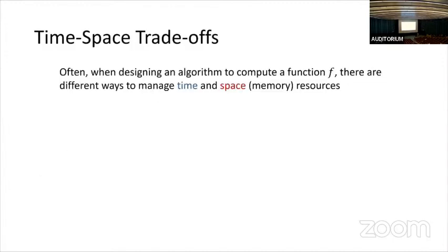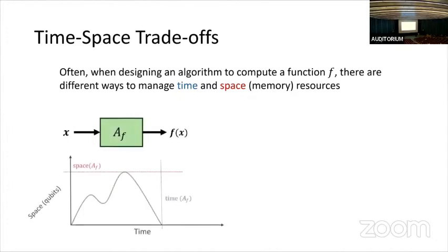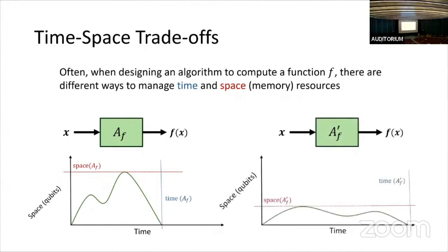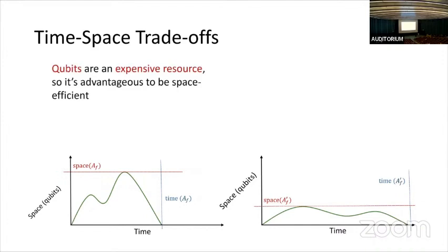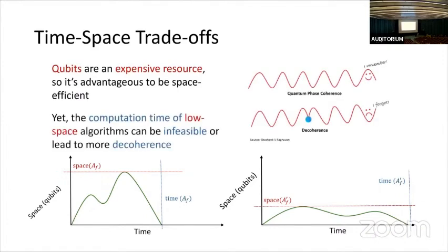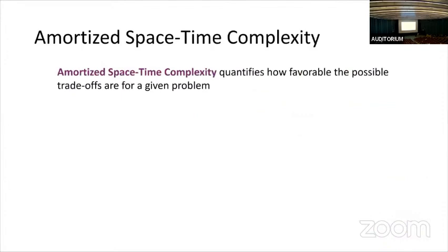We're interested in time-space trade-offs. When you're designing an algorithm to compute a function, oftentimes there are many ways to manage your space and time resources. You could have one algorithm that uses a relatively large amount of space but finishes the computation quickly. You could also design an algorithm that's space-bounded at the cost of a longer runtime. Qubits are expensive, so it's advantageous to be space-efficient, but being too extreme in saving space can make the runtime infeasible and lead to more decoherence. That's why we study amortized space-time complexity, which quantifies how good a trade-off our algorithm achieves.